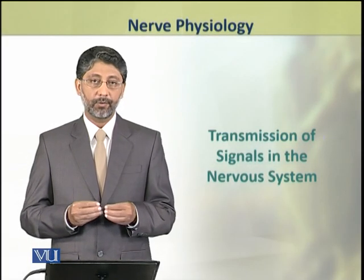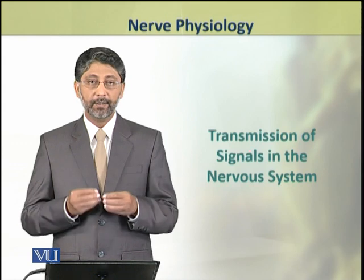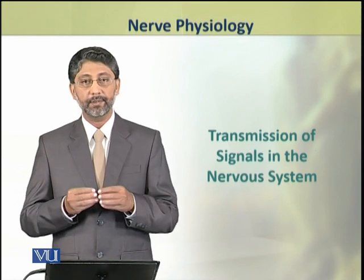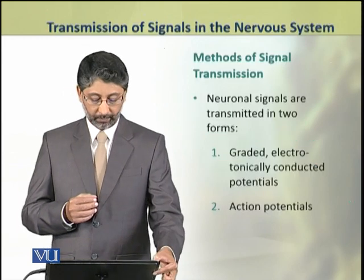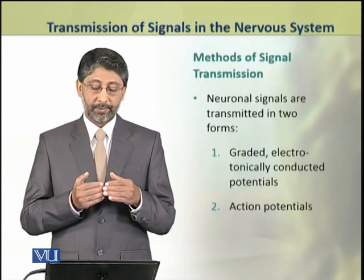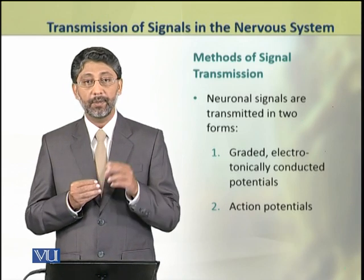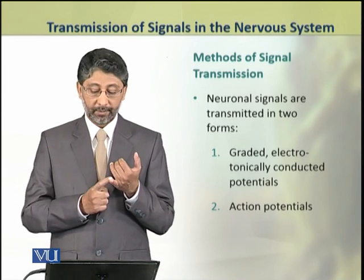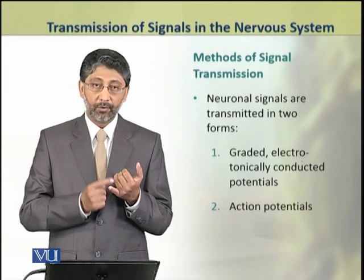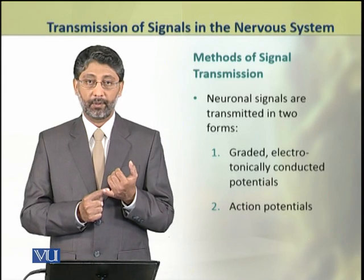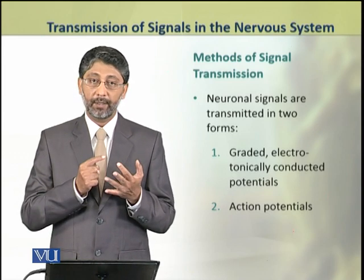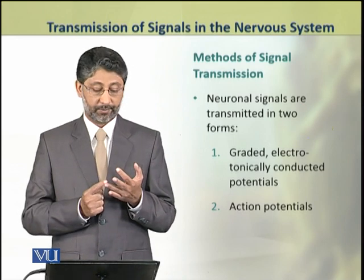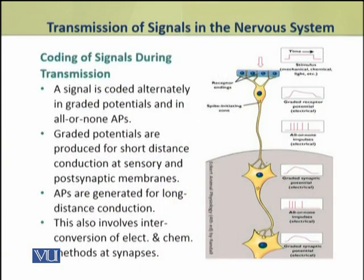Dear students, in this module we shall discuss the methods of transmission of signals in the nervous system. The neuronal signals are transmitted in the nervous system in two forms. The first method is the graded electrotonically conducted potentials, and the second form is action potentials. A signal is coded alternately in these two forms, that is graded potentials and action potentials.